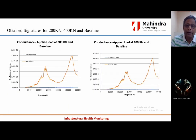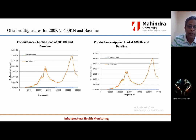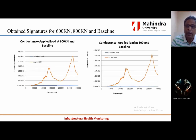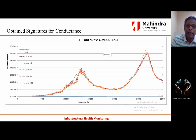However, inside the concrete cube, there is damage. The obtained signatures for 200 kN and 400 kN show curves with a clear difference — the baseline and the red curve showing the 200 kN signature have a wide difference, indicating that there is internal damage. Even at 400 kN, similar damage is shown, and at 600 kN and 800 kN similar damage is also indicated.